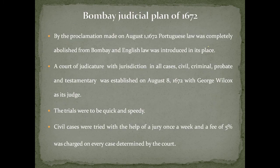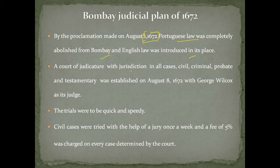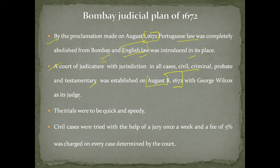Bombay Judicial Plan of 1672: by proclamation on August 1st 1672, Portuguese law was completely abolished from Bombay and English law was introduced in its place. A Court of Judicature with jurisdiction in all cases — civil, criminal, probate and testamentary — was established on August 8th 1672, with George Wilcox as its judge.